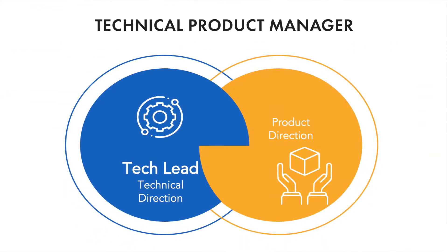A technical product manager is similar to a normal product manager — they're involved in the business side of running things, team leadership, and building roadmaps. However, what separates them is that technical product managers rely on their technical knowledge and understanding of product development to shape the product over the long term. They serve the product owner's vision directly and are responsible for translating that product vision into action.